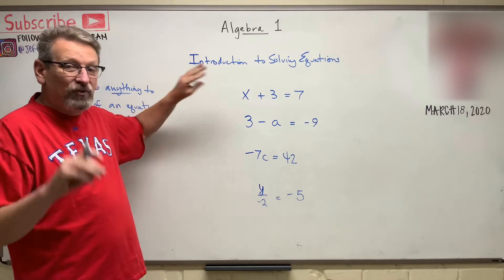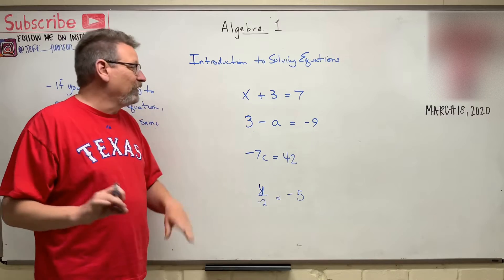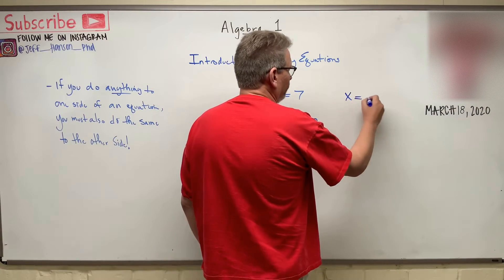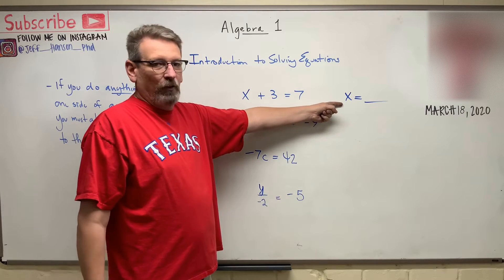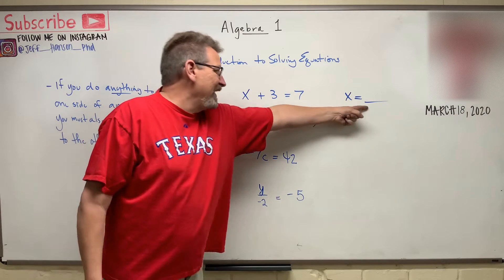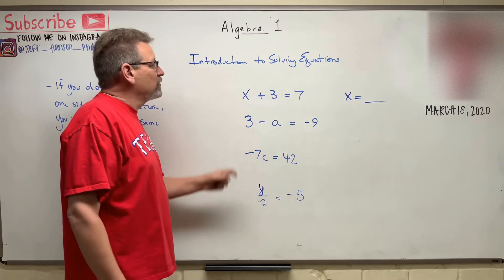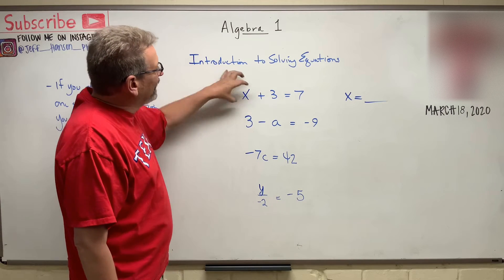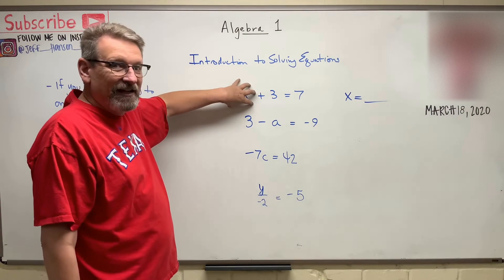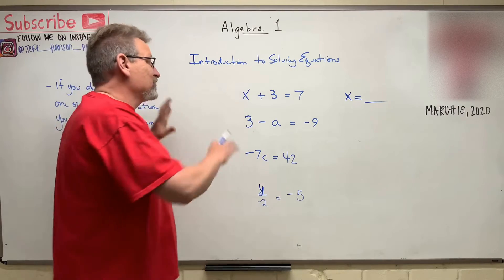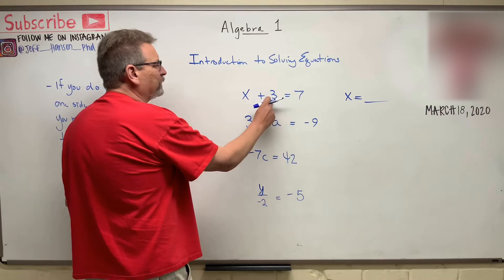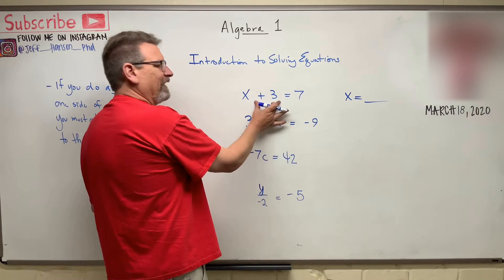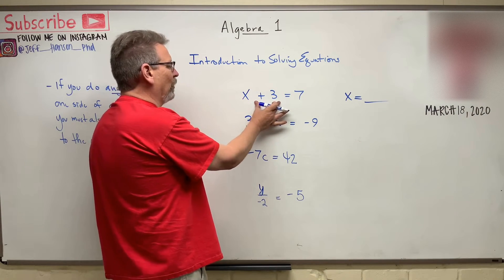Anyway, the secret is I'm trying to get X all by itself because what I want is like this. I want X equals a number. I want to know what is X. That's what I'm looking for. What is X? Well, I'm going to find it. It's something. So the whole secret here is to try and get the variable isolated. Get him all by himself. So I want everything else to go to the other side. So I want that three to go to the other side. I want him to go away from over here. So how do I make a three go away?